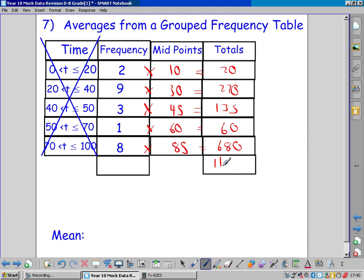So we're estimating that the total time for everybody was 1165. We don't divide by 5. It's not how many rows there are, it's how many pieces of data there are. And we already worked out that was 23.